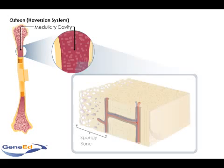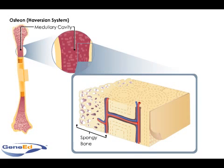This matrix includes spongy bone and compact bone. Also called cancellous bone, spongy bone contains a mesh-like network of trabeculae, while bone marrow fills in the empty spaces. Bone's external layers are compact bone, while the internal layers are spongy bone.